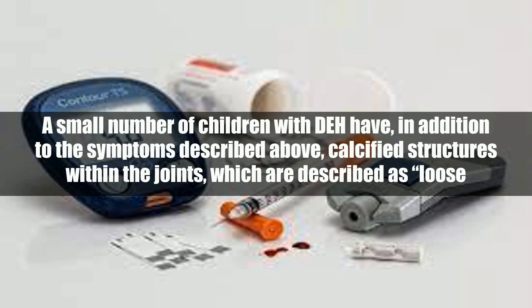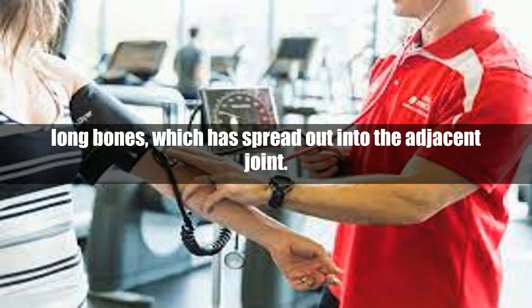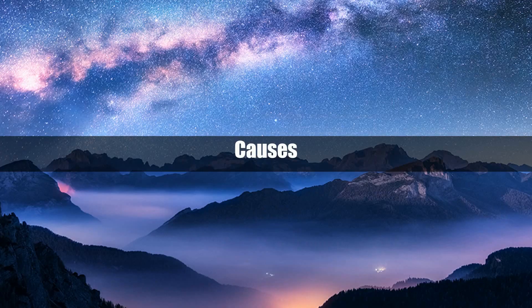A small number of children with DEH have, in addition to the symptoms described above, calcified structures within the joints, which are described as loose bodies, and are recognized by radiographs and CT studies. They represent osteocartilaginous fragments of DEH tissue, originally located in the distal end of the long bones, which have spread out into the adjacent joint spaces.